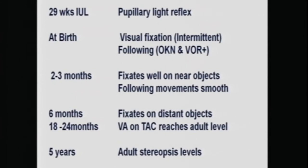Important milestones: at birth the child has intermittent visual fixation on nearby targets, particularly a mother's face — high contrast objects are what a child can fixate on. By two to three months, fixation on near objects is good and follow movements are smoother. By six months the child fixes on distance objects while sitting without support. By 18 to 24 months visual acuity reaches adult levels on most measurement methods, and by five years adult stereopsis levels are absolutely achieved.